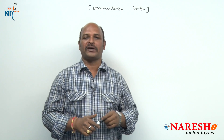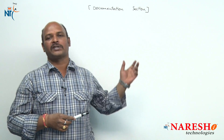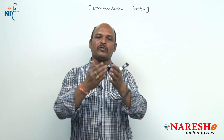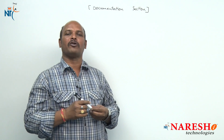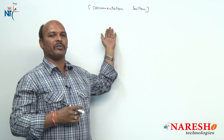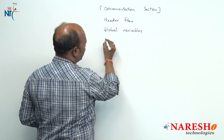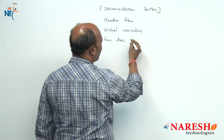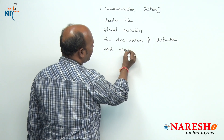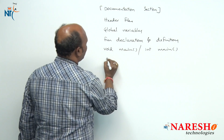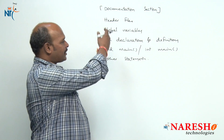The programming structure of C++ contains: first, the documentation section; next, header files (mandatory); then global variables (optional); followed by function declarations, also called prototyping, and function definitions; and finally the main part — 'void main' or 'int main.' Every C or C++ program is divided into these sections, which closely resemble the C programming structure.